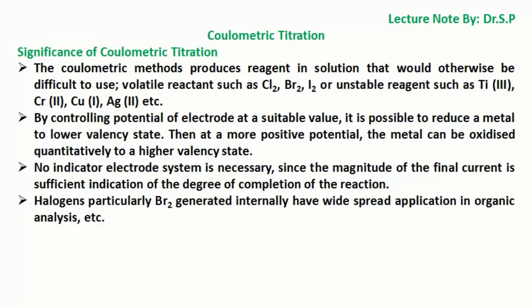By controlling the potential of the electrode at a suitable value, it is possible to reduce a metal to a lower valency state. Then at a more positive potential, the metal can be oxidized quantitatively to a higher valency state.